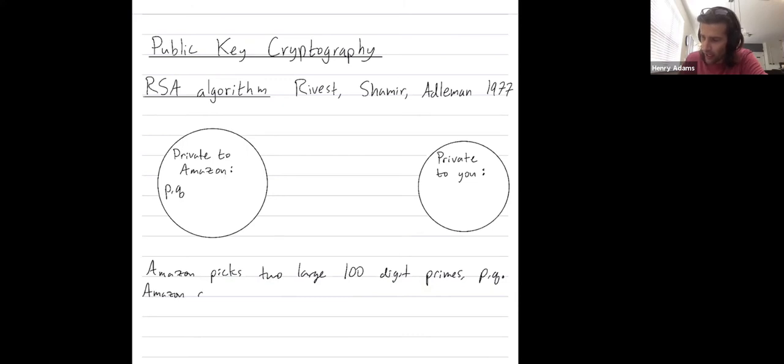Next, Amazon generates two 200 digit integers E and D, such that we have the following relation: P minus 1 times Q minus 1 divides evenly into E times D minus 1.